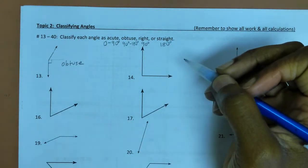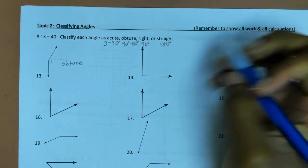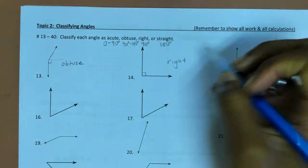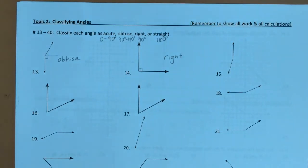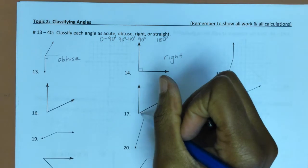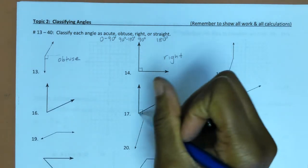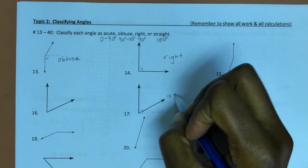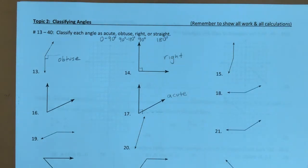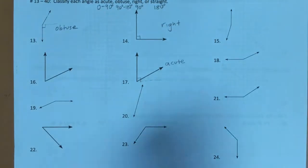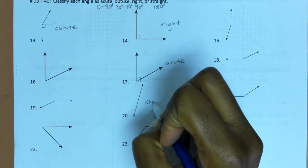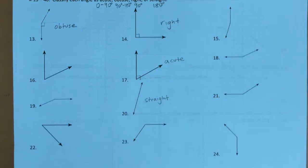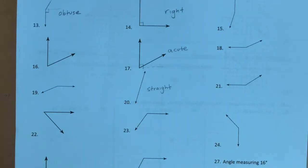You're looking to see if the angle is larger than a corner of paper, smaller than a corner, exactly a corner, or a straight line. The first example is larger than 90, making it an obtuse angle. Number 17 is not quite 90 degrees, so it's acute. And number 20 is a straight angle. This page is pretty self-explanatory.